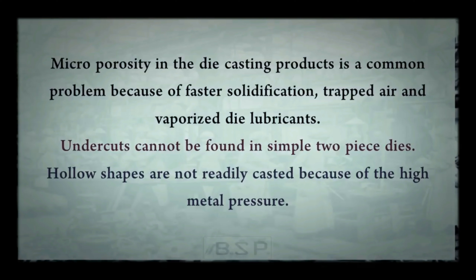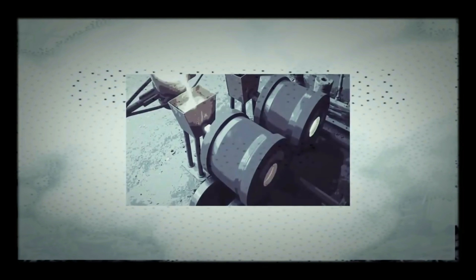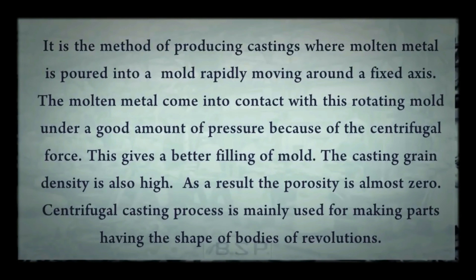Our next topic is centrifugal casting. Centrifugal casting is a method of producing castings where molten metal is poured into a mold rapidly moving around a fixed axis. The molten metal comes in contact with this rotating mold under a good amount of pressure because of the centrifugal force. This gives a better filling of the mold, and the casting grain density is also high. As a result, the porosity is almost zero.